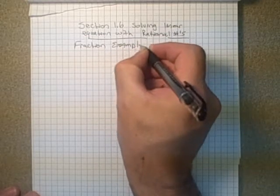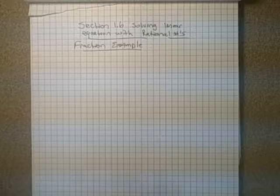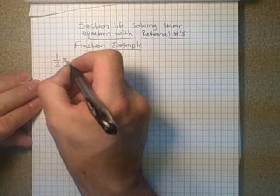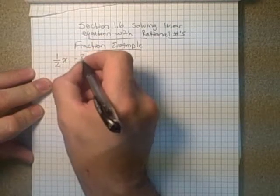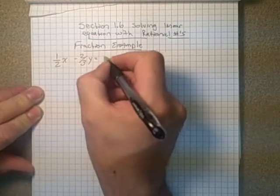Okay, so I've chosen an example here that's going to work for us. And it would be one-half x subtract two-thirds y is going to equal seven-thirds.